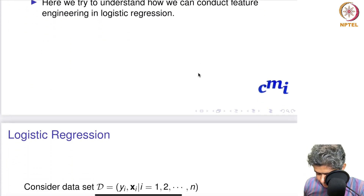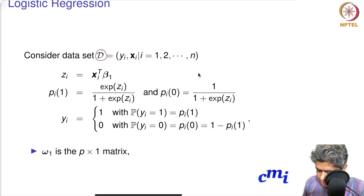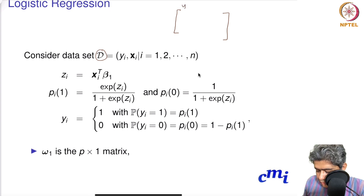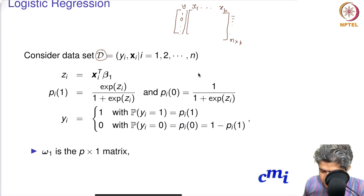A typical logistic regression model will have a dataset D. Thinking of it like an Excel spreadsheet or data frame, you have a column y where y is ones and zeros, and then you have p features x1 through xp. You have n such rows, so that means you have n cross p x-columns and a vector of y zero-ones. The i-th row has yi and xi-transpose.